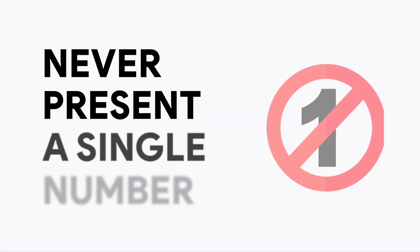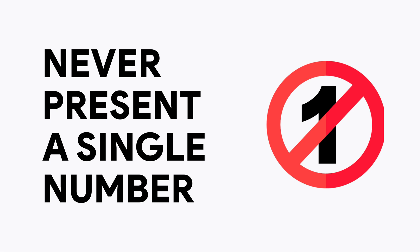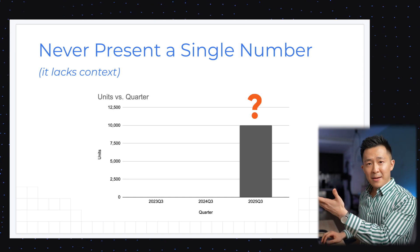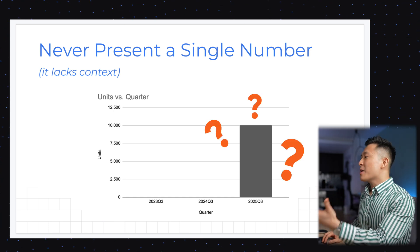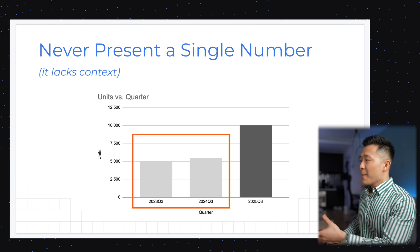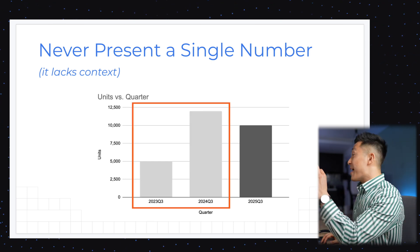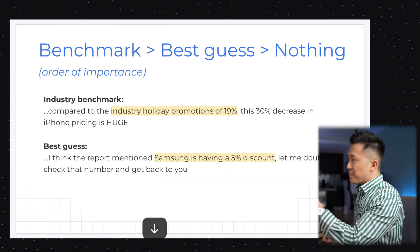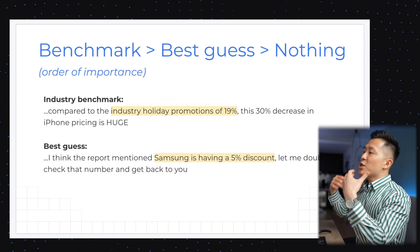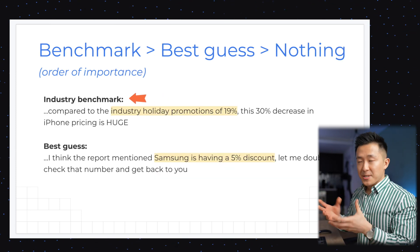Diving into data visualization tip number one: never present a single number since it gives the audience no context. Let's say the iPhone goes on a huge sale for 5,000 US dollars and they sell 10,000 units. Is this good? Is this bad? There's no way of knowing unless you compare historical performance, because this tells a very different story than this. If you don't have access to historical data, the next best thing is to use industry benchmarks for comparison.